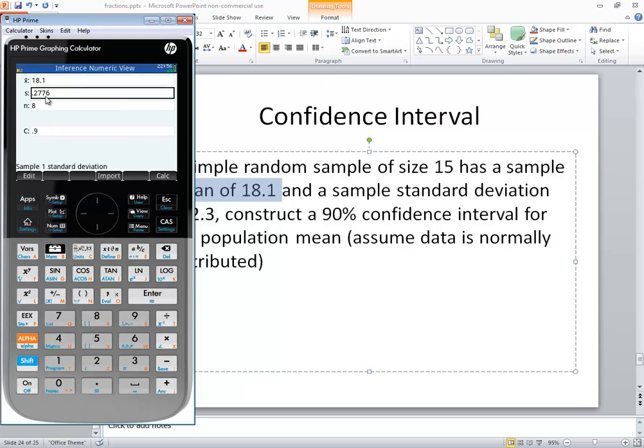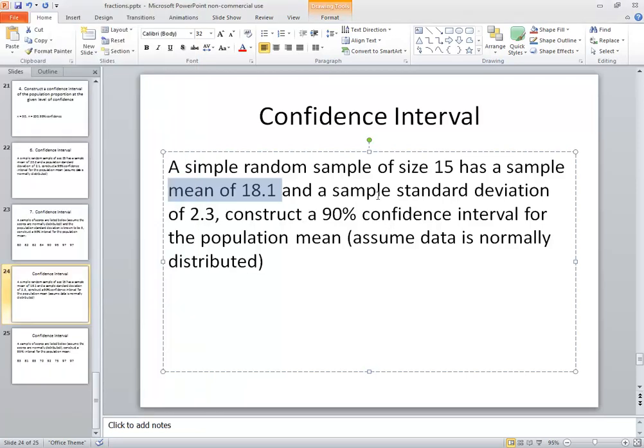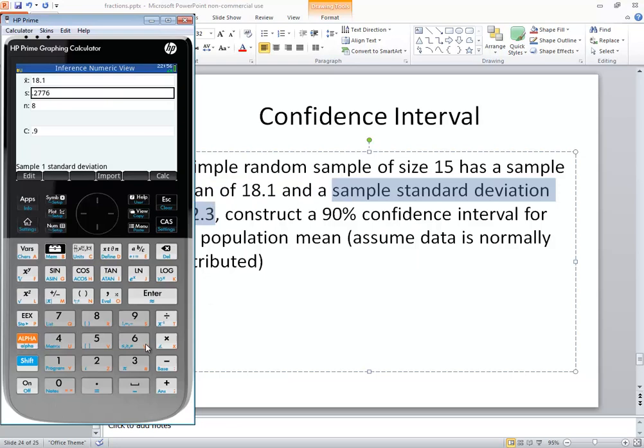And that's asking us for s, which is the sample standard deviation. It tells us the sample standard deviation is 2.3. So I put in 2.3 and press enter.